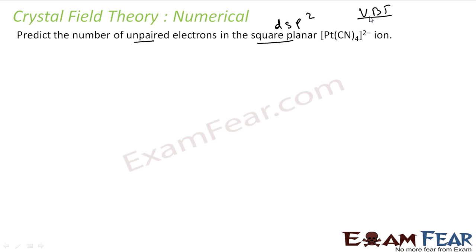Looks like we need to use valence bond theory here. We could use crystal field theory also, but since in valence bond theory either hybridization is given and you have to find the unpaired electrons, or unpaired electrons are given and you have to find the hybridization. So let's use valence bond theory here.